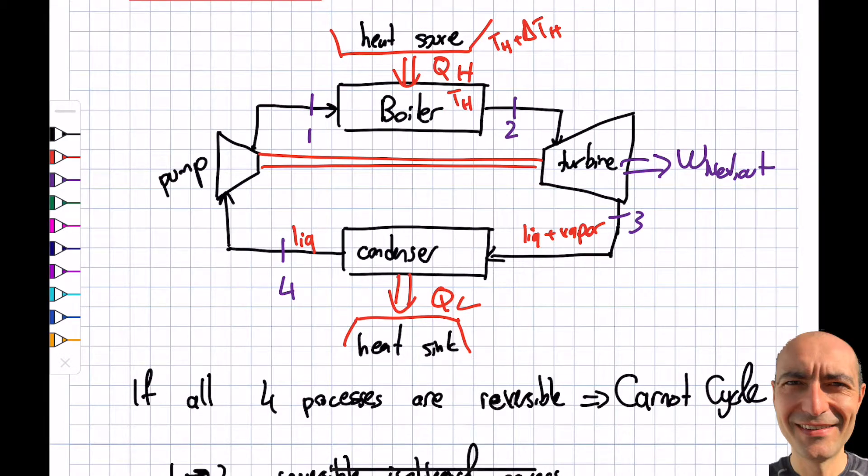The heat source is slightly above, like 25.0000001. Whenever I lose some heat in the boiler, I add slightly more from here to here. This delta is so small that I can have this reversible process.